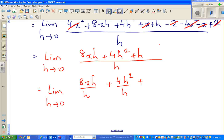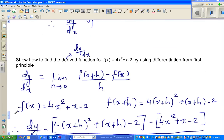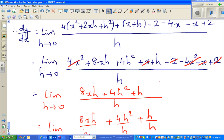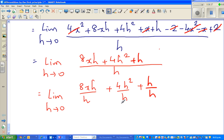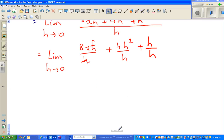I'm modeling what you should be doing in your exam situation. So this h and this h gets canceled. So this becomes limit when h approaches 0 of 8x plus 4h plus 1.